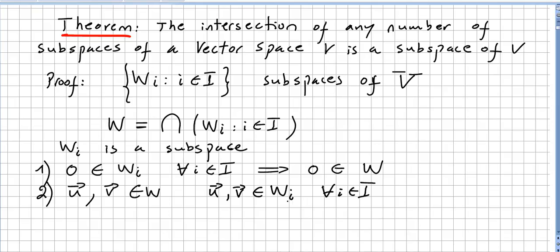Now, since each wi here, every single one is a subspace, we have a times u plus b times v vectors. They will be in W. So this means that au plus bv is in W.